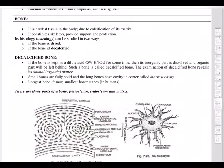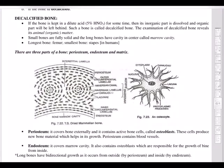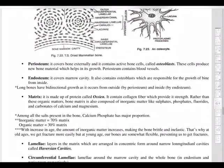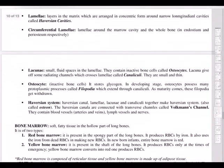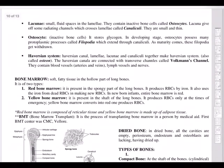Bone is the hardest tissue in the body due to calcification of its matrix. It constitutes the skeleton and provides support and protection. A dried, decalcified bone can be studied by keeping it in dilute HNO3. When examining a section of dried mammalian bone, the key structures to remember are the lamella, the Haversian canal, and the bone cell called the osteocyte.